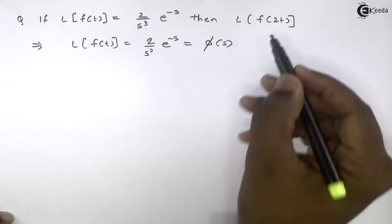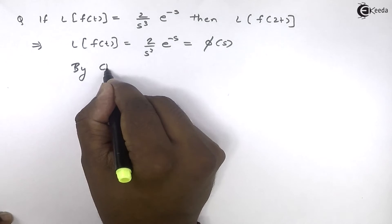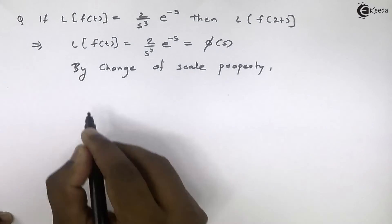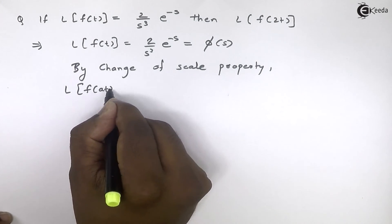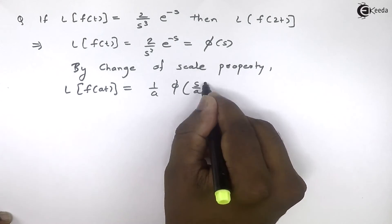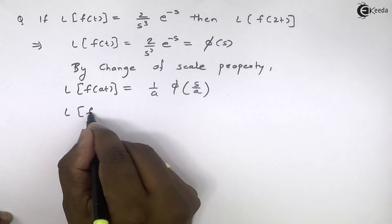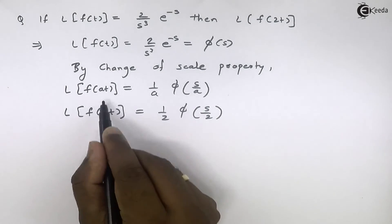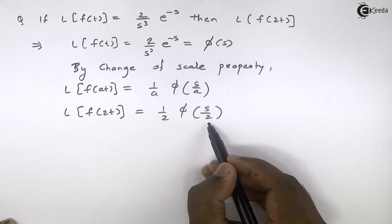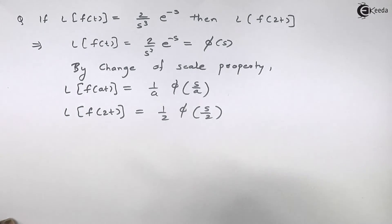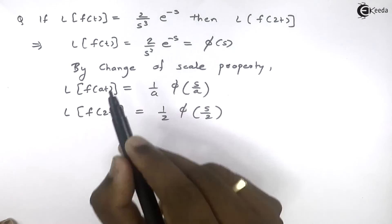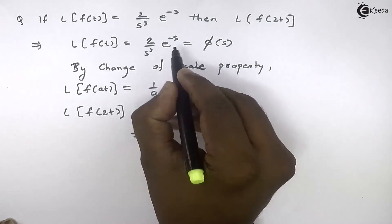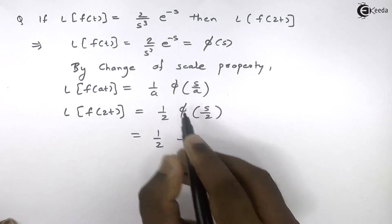To find the Laplace transform of f(2t), we use the change of scale property. By this property, the Laplace transform of f(at) equals 1 upon a times phi of s by a. Hence the Laplace transform of f(2t) becomes 1 upon 2 times phi of s by 2, since a is 2. To find phi of s by 2, we take phi of s and replace every s with s by 2. So we have 1 upon 2, and the numerator 2 remains as it is, with s cubed.